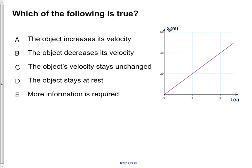The first thing to do when doing a problem like this is to determine what type of graph you're given. So we're given a position versus time graph. And now you notice that almost all of the choices are involving velocity. Say velocity, velocity, velocity stays at rest while E says more information is required.